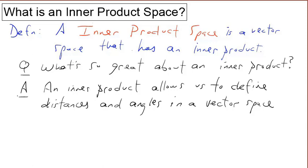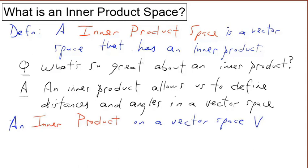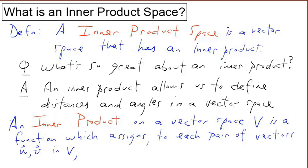An inner product on a vector space is a function which assigns to each pair of vectors u and v in the vector space a number, denoted by bracket notation, that satisfies the following properties.